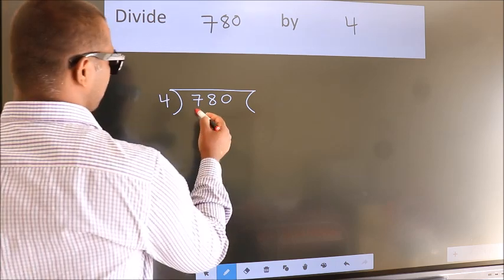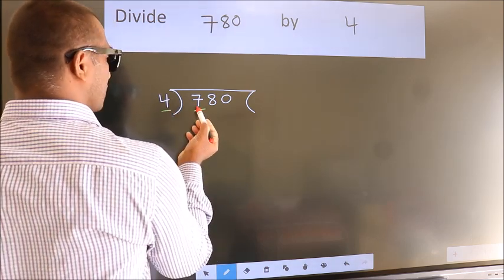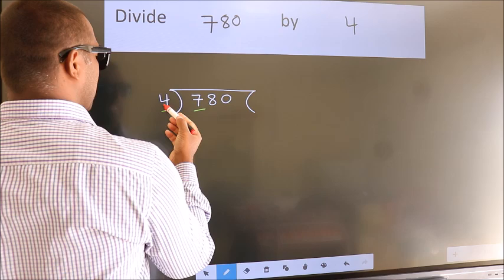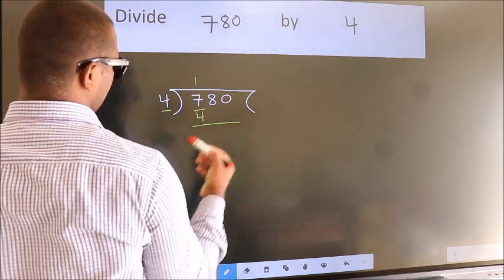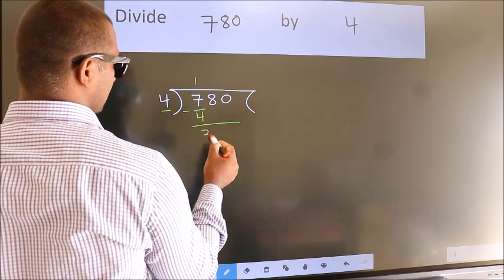Here we have 7, here 4. A number close to 7 in the 4 table is 4 once 4. Now we should subtract. We get 3.